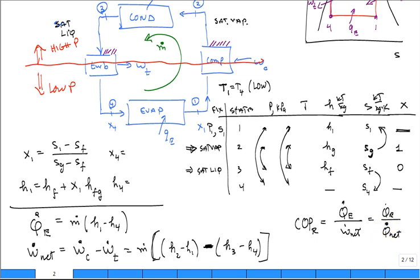And that Q dot net is Q dot in the evaporator minus, or I'm sorry, the Q dot net is equal to Q dot rejected in the condenser minus Q dot picked up in the evaporator.